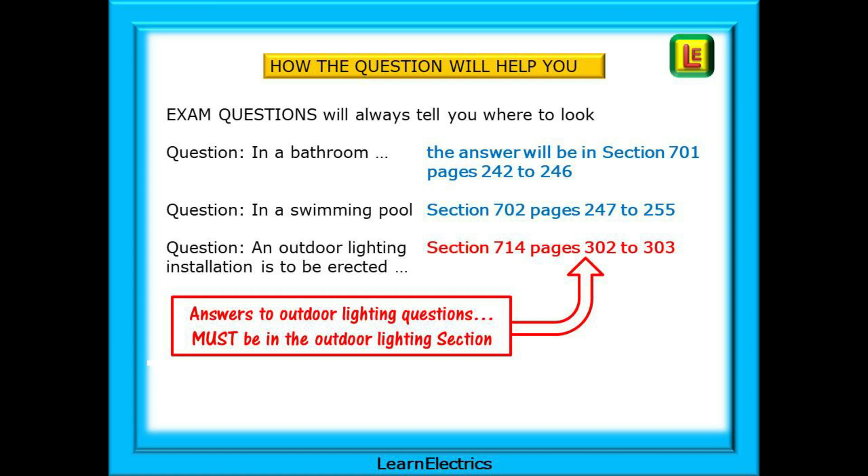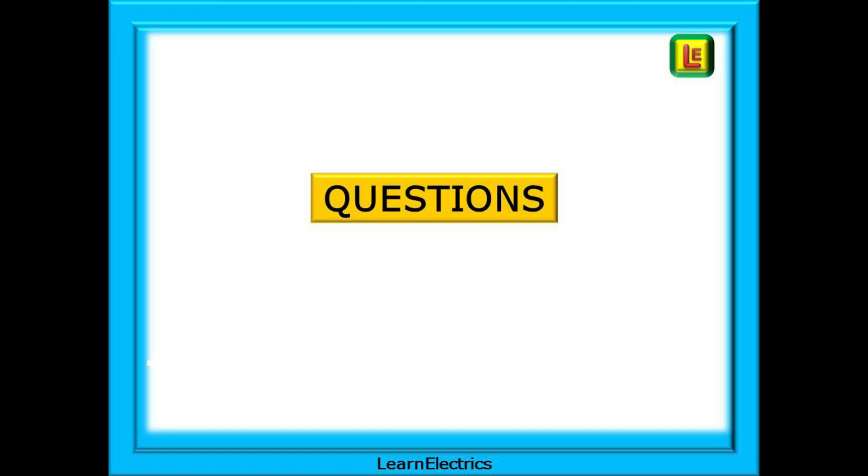And outdoor lighting is even easier. Answers to outdoor lighting questions must be in the outdoor lighting section on pages 302 and 303. How difficult is it going to be to find the answer on just 2 pages? Read the question. It will tell you where to look.